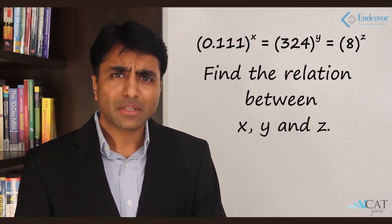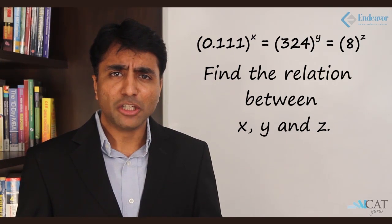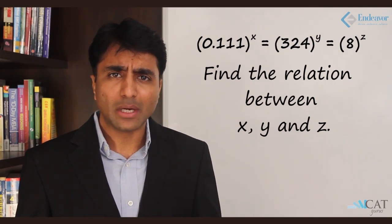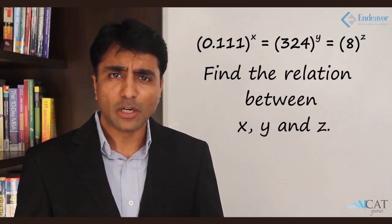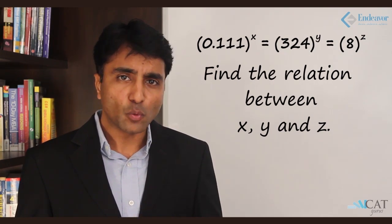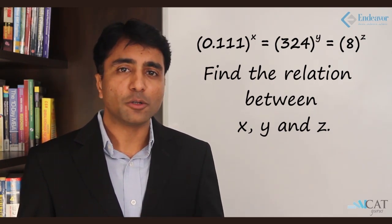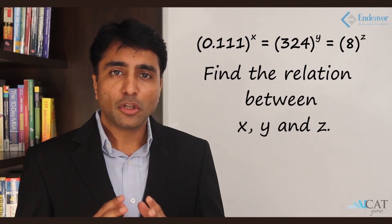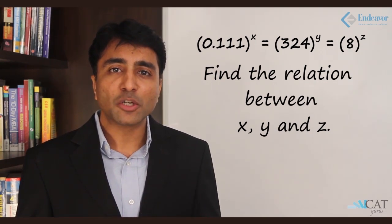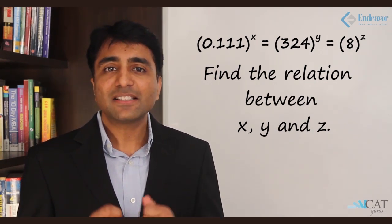Let us try to discuss the first question on simplification. Suppose if we have the terms as 0.111 raised to x equals 324 raised to y equals 8 to the power z. Now, how do we find out the relation between x, y, and z in such a term?